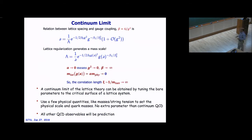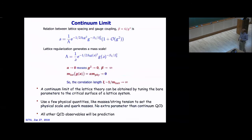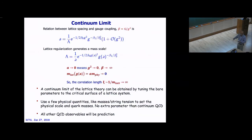We are not introducing any more parameters than demanded. The parameters are only the lattice spacing and the masses of the particles. The gauge coupling g is related to a, and you have to tune both a and the bare mass m. You use some physical quantities — masses, string tension — to tune those parameters, then all other QCD observables can be predicted.